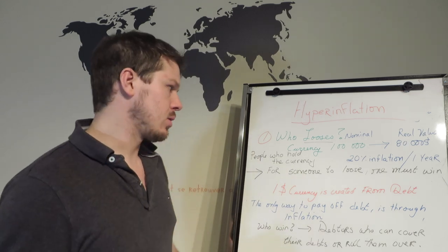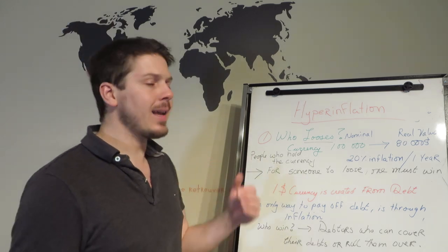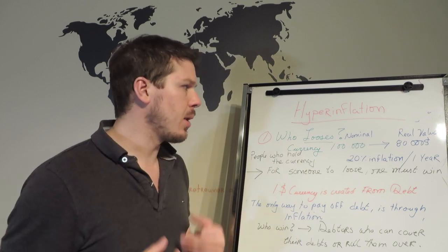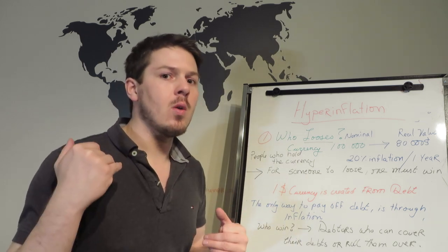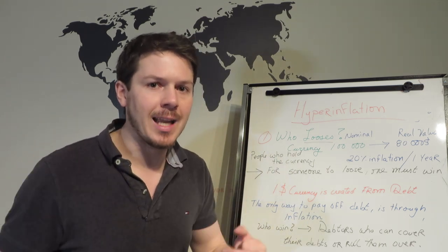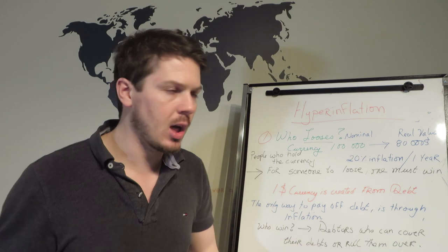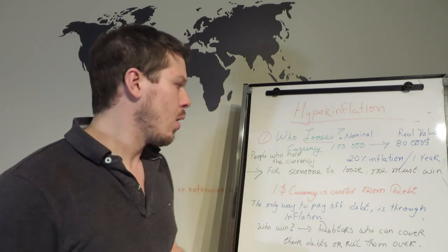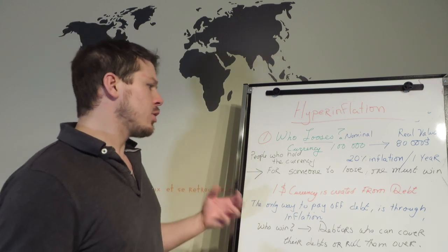In one year, if we have 20% inflation, the real value of that $100,000 becomes $80,000. So it still has a face value of $100,000, but it is only worth $80,000 in the sense that it can only purchase $80,000 worth of stuff because everything has increased in value over time.